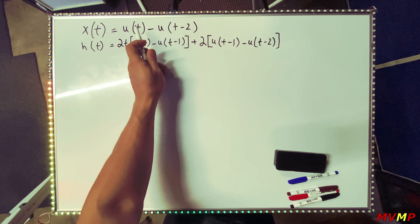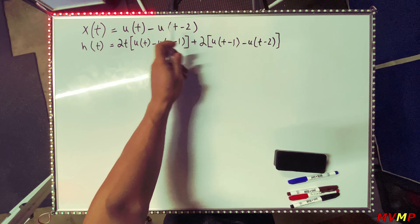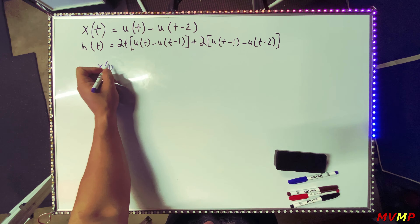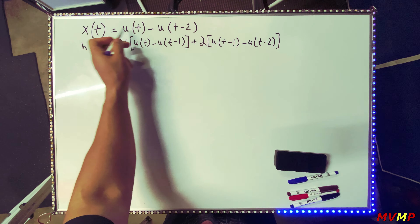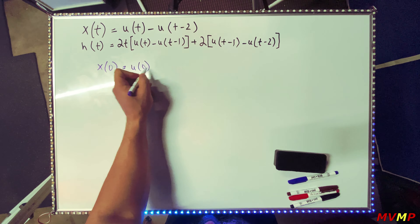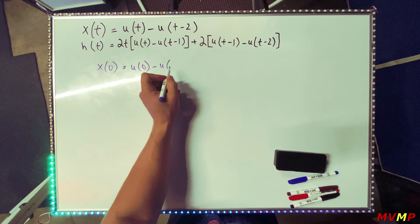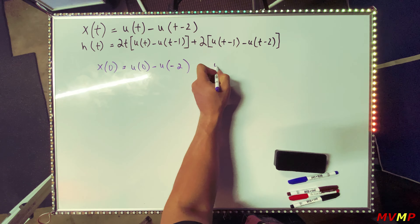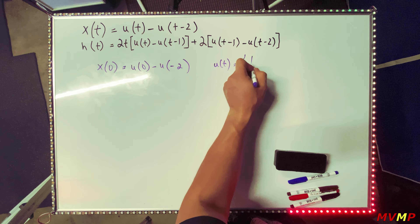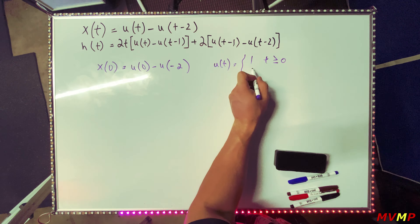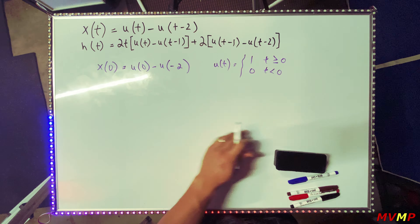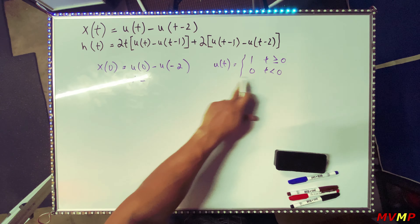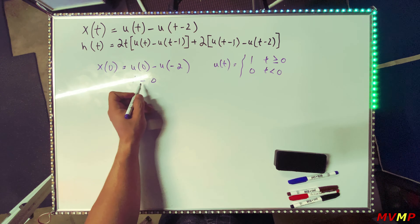So we plug in numbers from zero to two to get the graph for x(t). When we plug in zero, we get u(0) minus u(0−2). The unit step is one for t ≥ 0 and zero for t < 0. So u(0) is one, and u(−2) is zero, giving x(0) = 1.